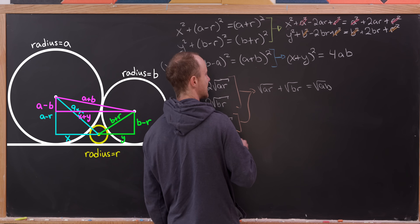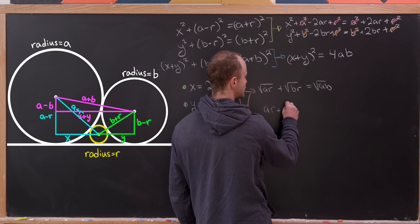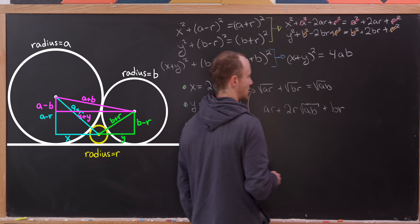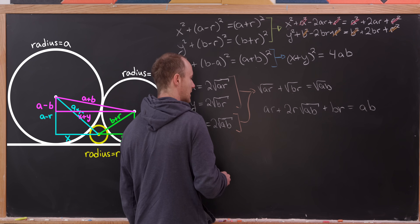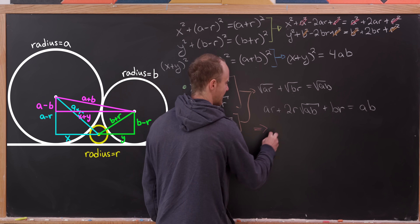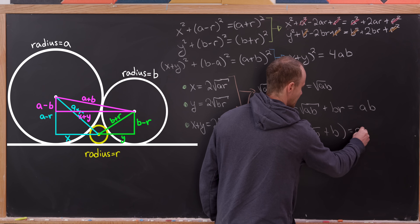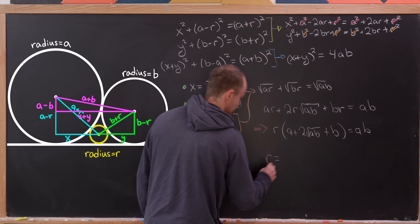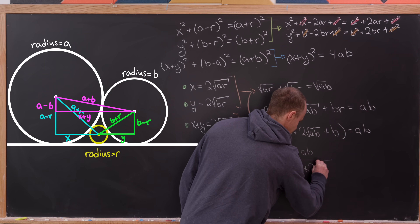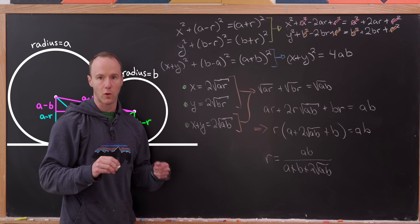Squaring both sides gives: AR + 2R√(AB) + BR = AB. The left-hand side has R as a common factor, so we factor it out: R(A + 2√(AB) + B) = AB. Dividing both sides by that quantity, we get R = AB / (A + B + 2√(AB)). That's the radius of the inscribed circle in terms of A and B.